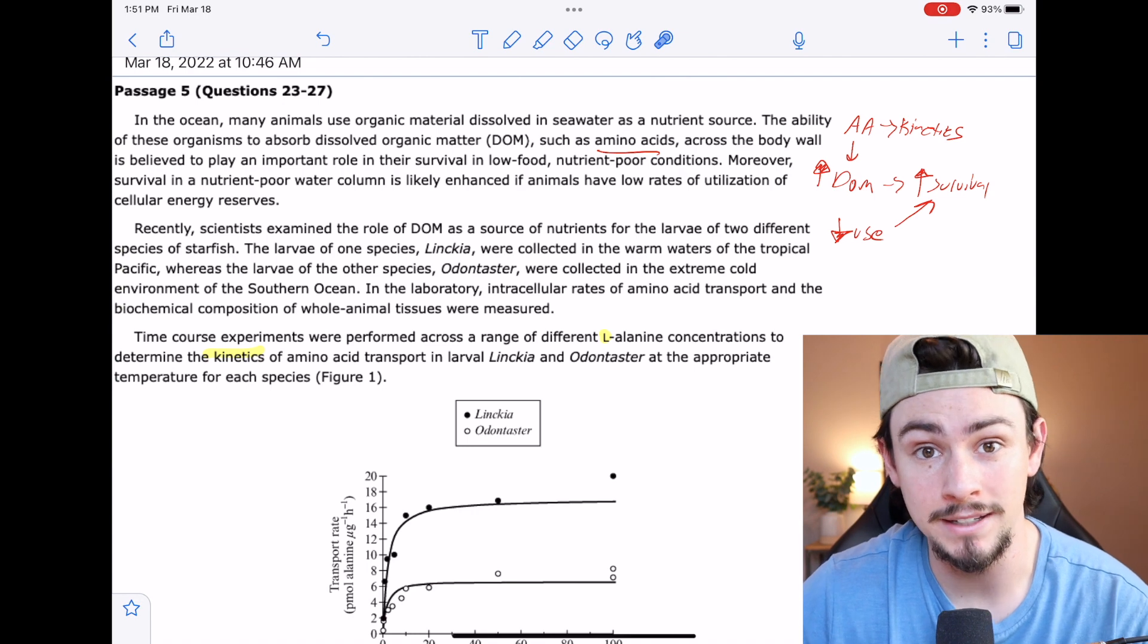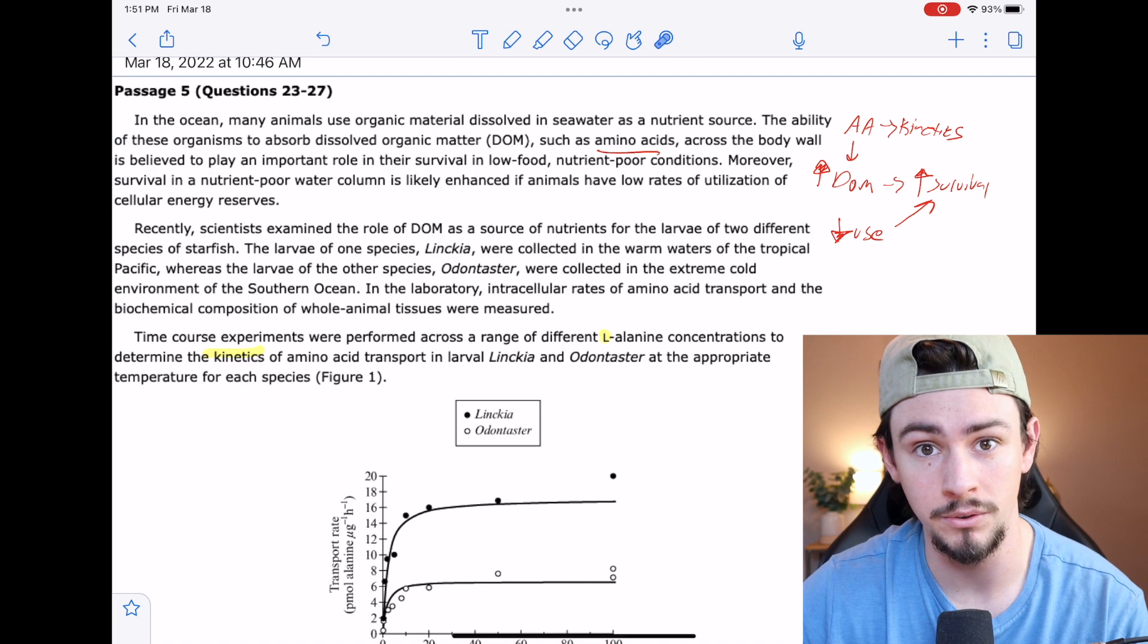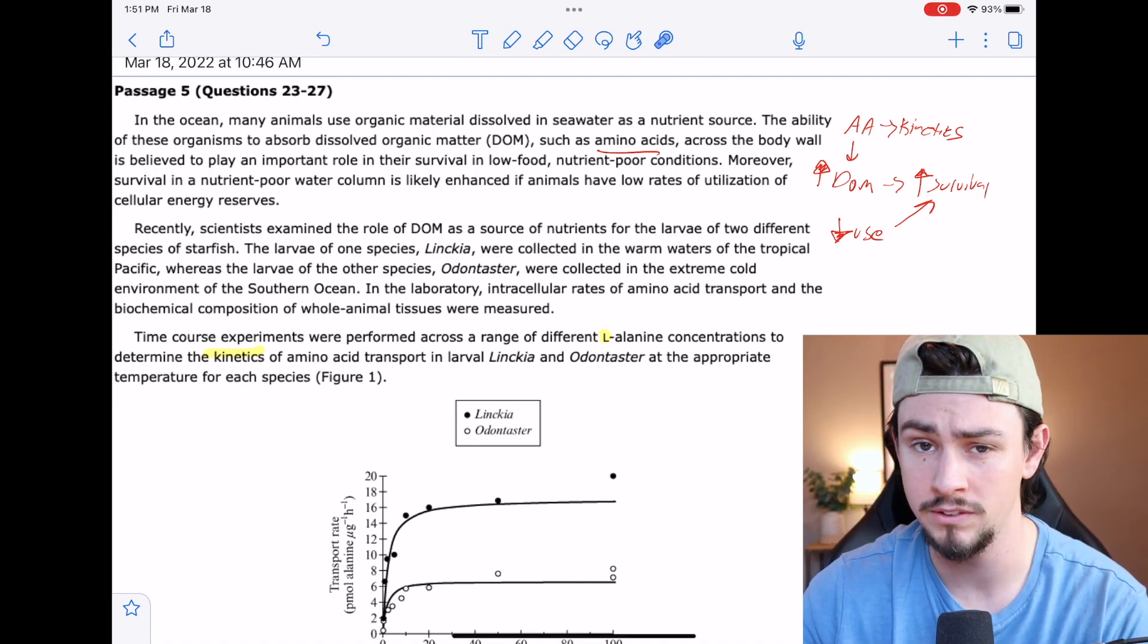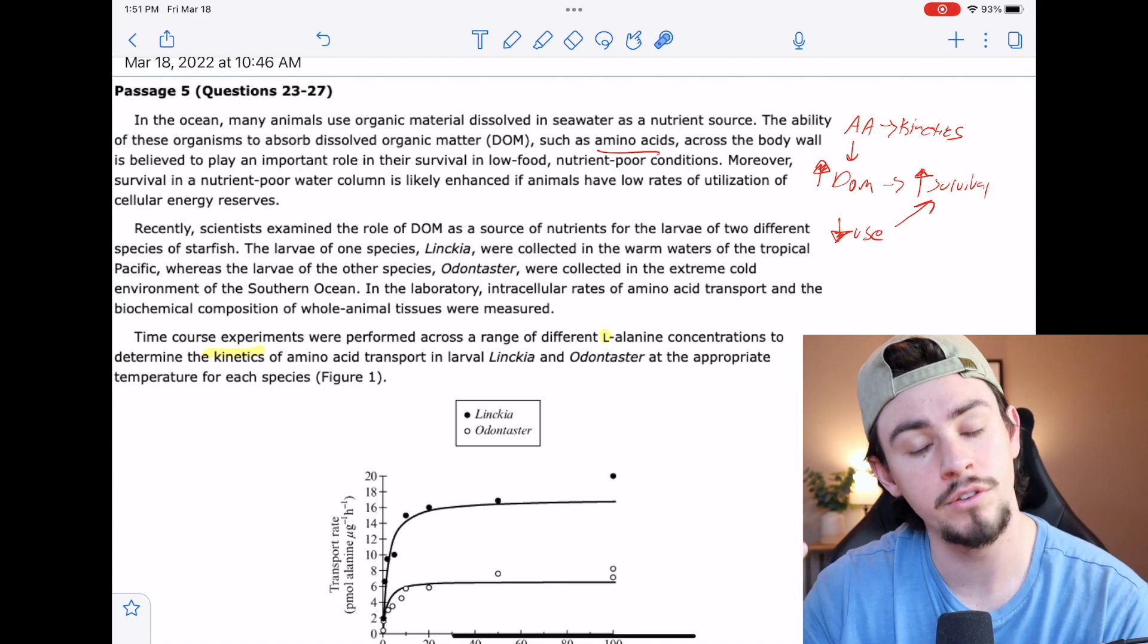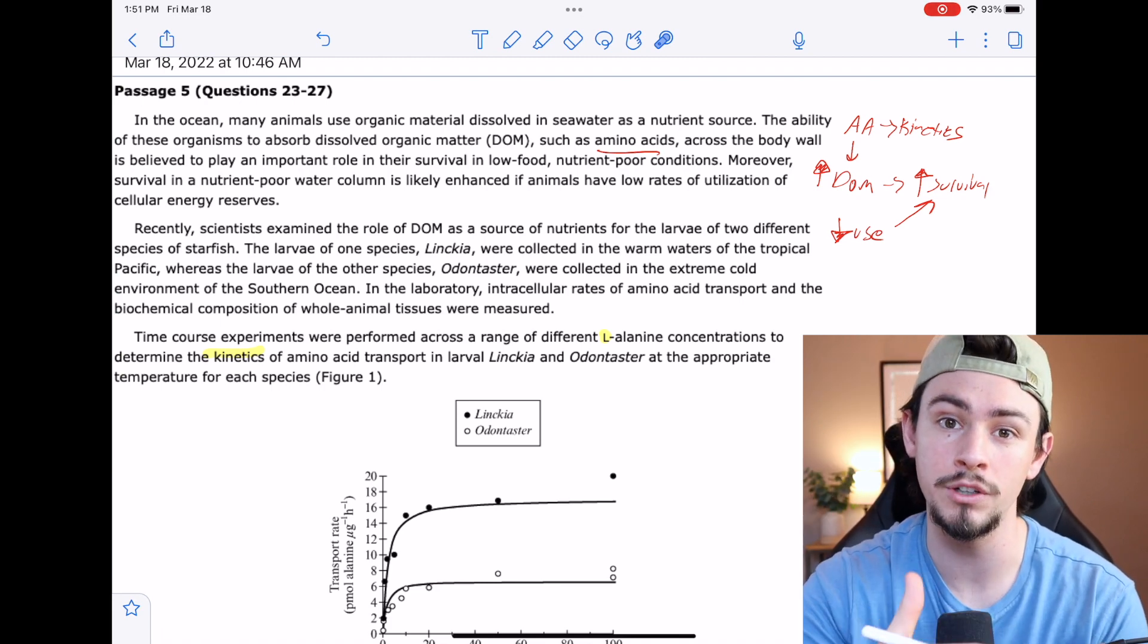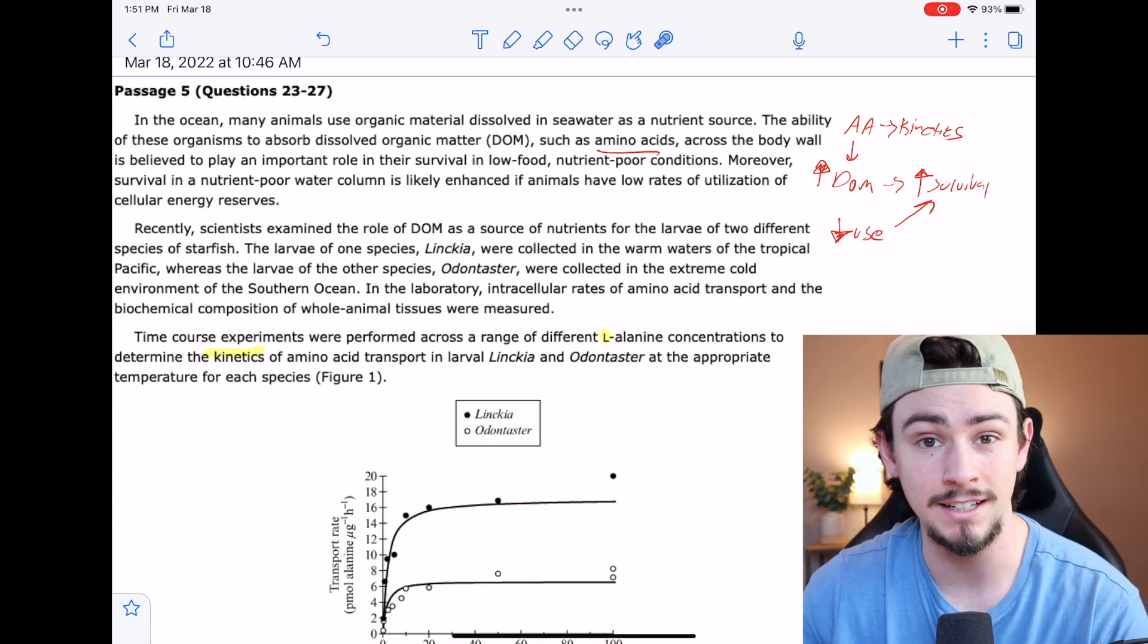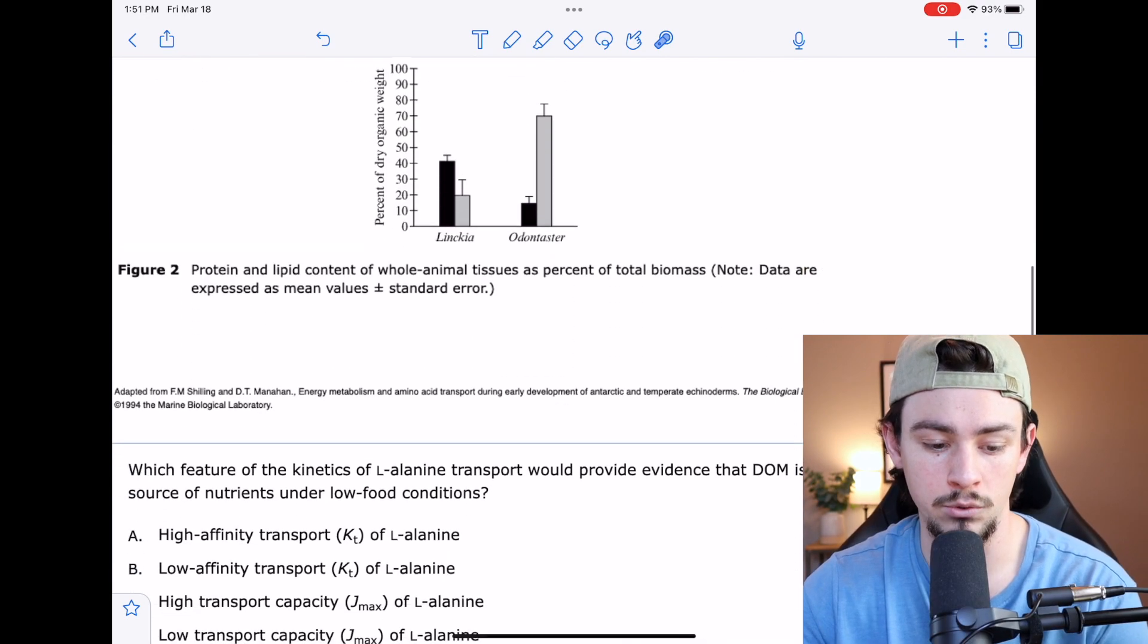This is an enzyme kinetics passage. It looks a lot different from the way that you learned enzyme kinetics, but that's what they're going to test you on here. So as you're going through these sciences and you're learning them, especially the high yield ones like amino acids or enzyme kinetics or things of that nature, make sure you're thinking of different ways that you could be tested on these subjects because it won't always be in the capacity that you learned it in. As a matter of fact, probably won't be.